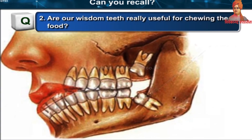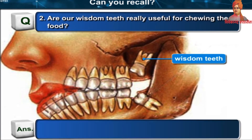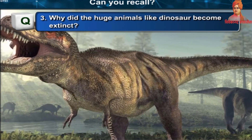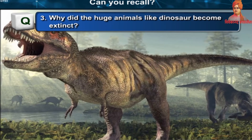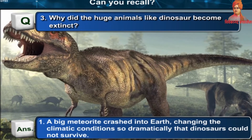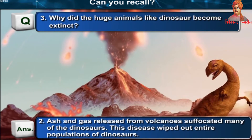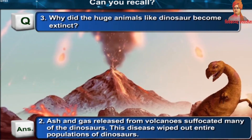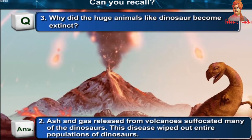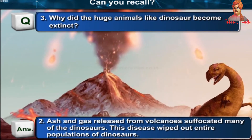Are our wisdom teeth really useful for chewing food? No. Why did huge animals like dinosaurs become extinct? A big meteorite crashed into the earth, changing the climatic conditions so dramatically that dinosaurs could not survive. Ash and gas released from volcanoes suffocated many of the dinosaurs, and disease wiped out entire populations. Food chain imbalances led to the starvation of the dinosaurs.